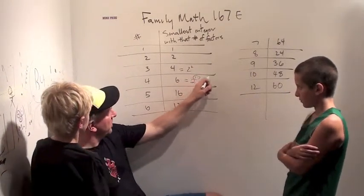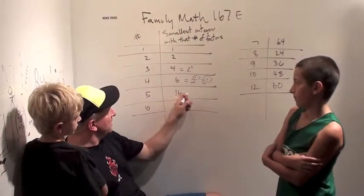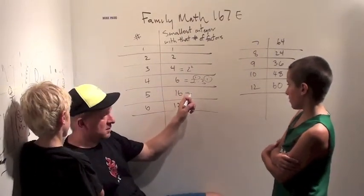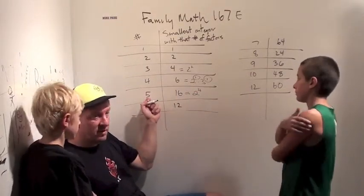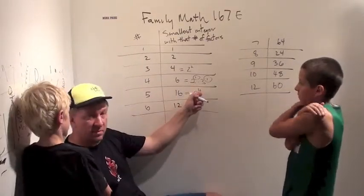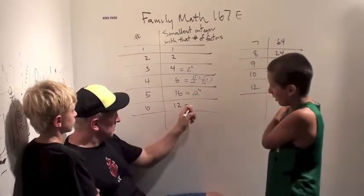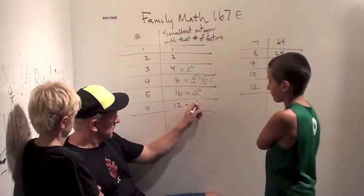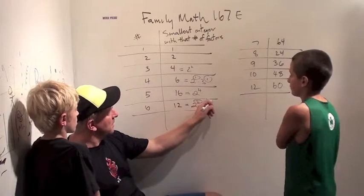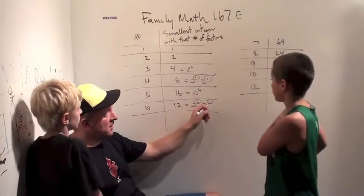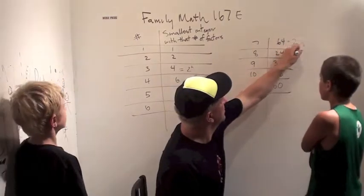Two times two is four. Sixteen is two to the fourth. So the only way to get five factors is just add one here. Six factors is twelve, which is two times two times three — that's three times two. Remember, we're always adding one. Seven factors is sixty-four, which is two to the sixth.